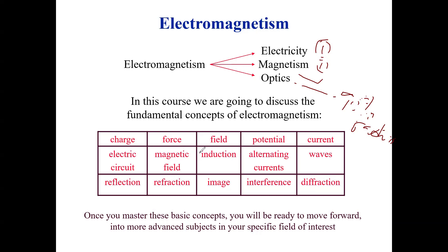Under optics, we have the properties of light — reflection, refraction, image formation, interference, and diffraction. Optics physics uses the application of reflection, refraction, interference, and diffraction to generate an image or something meaningful. Once you master this basic concept of electromagnetism, you will be ready to move forward into more advanced subjects in your specific field of interest. That is the reason why you are doing these courses — electricity, magnetism, and optics physics.